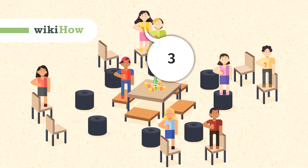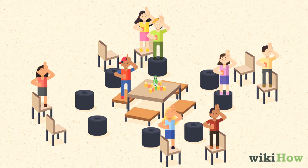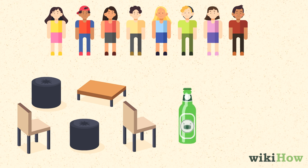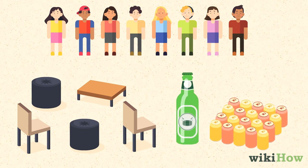To play True American, the drinking and obstacle course game from the TV show New Girl, you'll need four or more players, furniture to stand on, a bottle of liquor, and a lot of cans of beer.